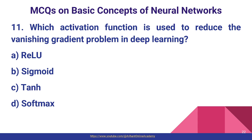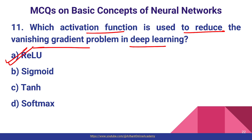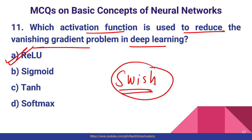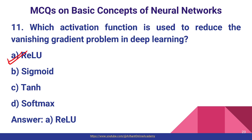Question number eleven: which activation function is used to reduce the vanishing gradient problem in deep learning? The vanishing gradient problem is addressed by ReLU — Rectified Linear Unit. ReLU resolves the vanishing gradient problem in deep learning models.